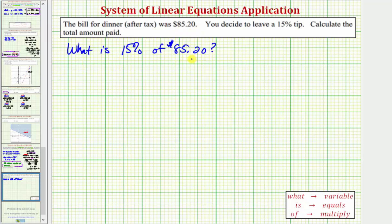So if we want to answer this question using a percent equation, for review, we use the keywords shown here below, where if we see the word what or what number, this represents the unknown. So we write down the variable, is means equals, and of means multiply.